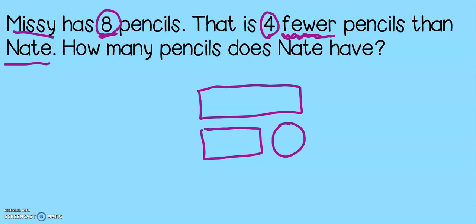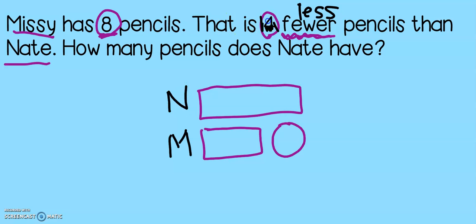Now this wording is a little bit tricky. If I take out the number four and say Missy has eight pencils — that is fewer pencils than Nate — and I know that fewer means less, then that means Missy has less than Nate. The wording is a little bit strange; we have to read it very carefully in order to solve. But that means Missy has less.